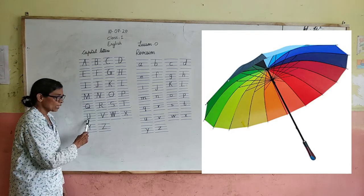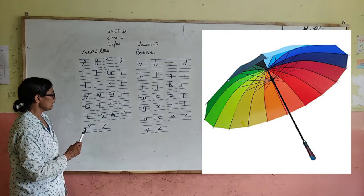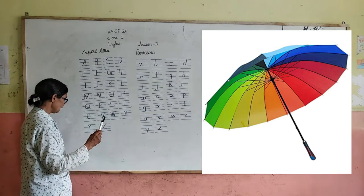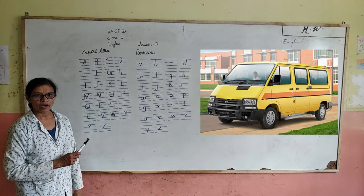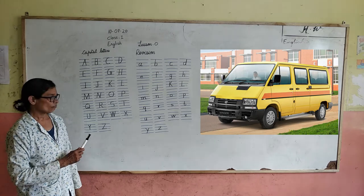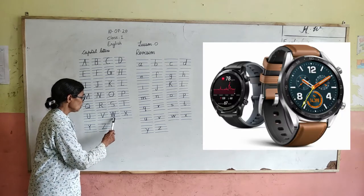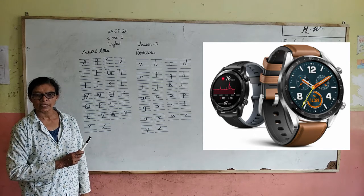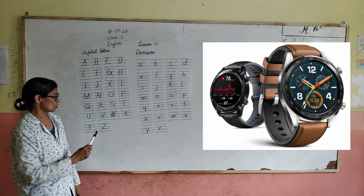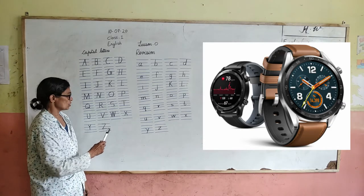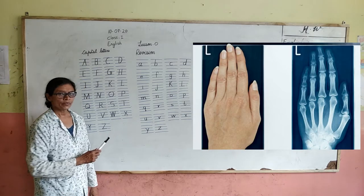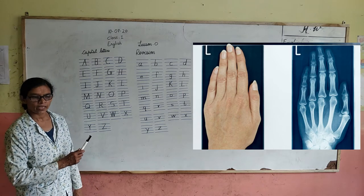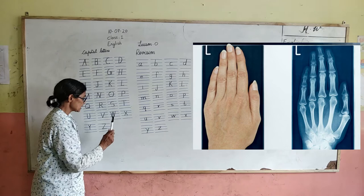U for umbrella — U-M-B-R-E-L-L-A, umbrella. V for van — V-A-N, van. W for watch — W-A-T-C-H, watch. X for x-ray — X-R-A-Y, x-ray.